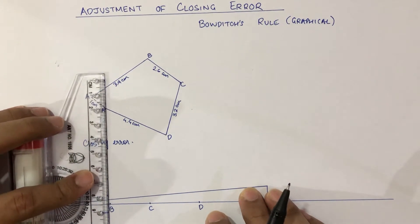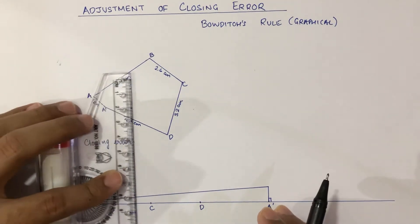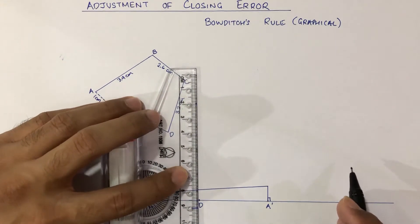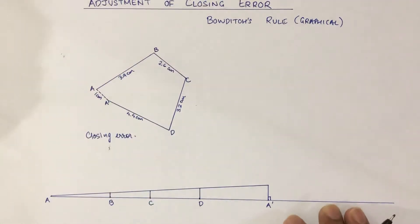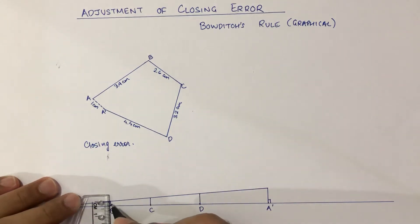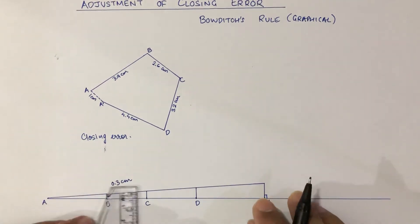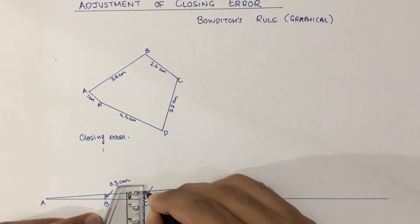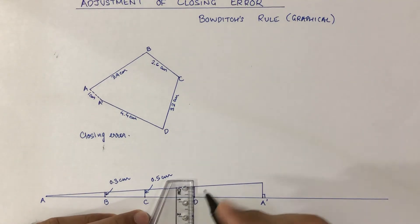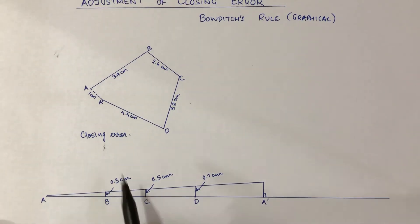We also extend a perpendicular line from point B to the sloping line, similarly from point C and from point D. We measure these distances: the perpendicular from B comes out to approximately 0.3 centimeters, from C it is 0.5 centimeters, and from D it is 0.7 centimeters.